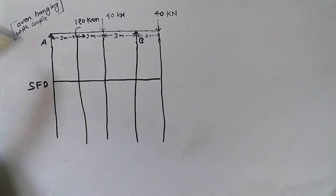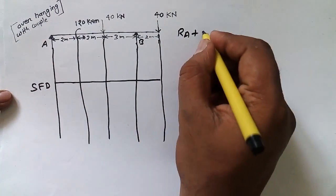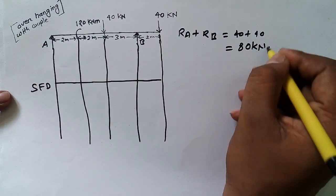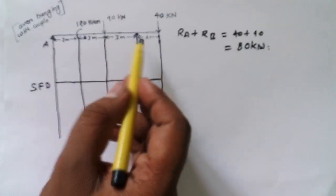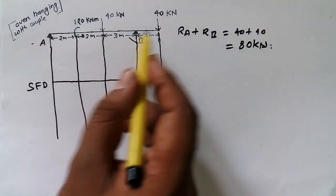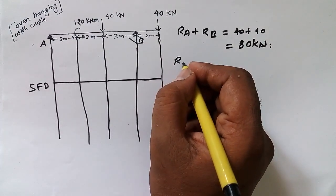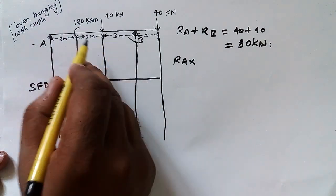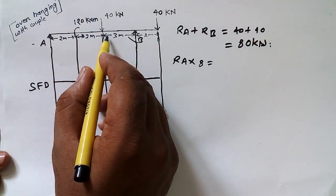Now before drawing the shear force diagram, we have to find out the reaction forces at A and B. So Ra plus Rb is equal to 40 plus 40, that means 80 kilonewtons. Now we are going to take moments, and we can write the equation as: Ra into 8 equals 40 into 3, where 40 is the point load.